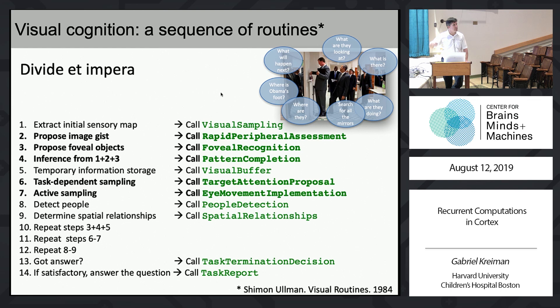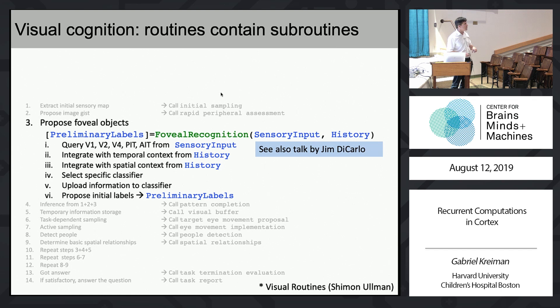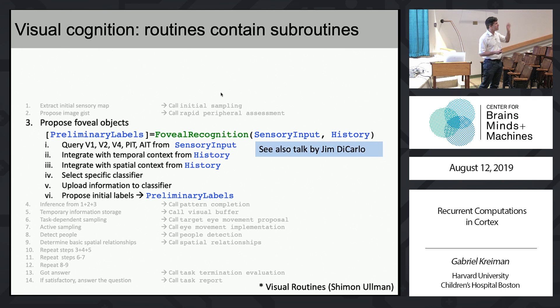I'm going to give you an example of a few of these. When I get more into the meat of specific routines and computations, I want to encourage people to stop and ask questions. Each one of these routines can in turn be subdivided into multiple subroutines. Perhaps one of the best understood is how to propose a foveal object — what happens along the ventral visual stream. I'll give a brief introduction because Jim is going to say much more about this very soon.